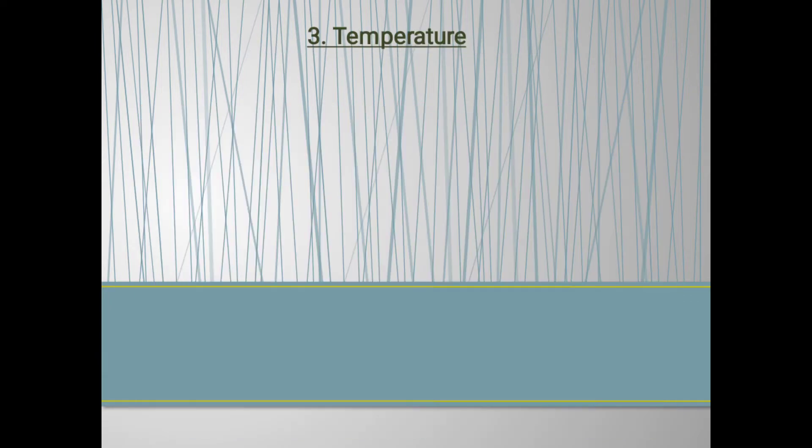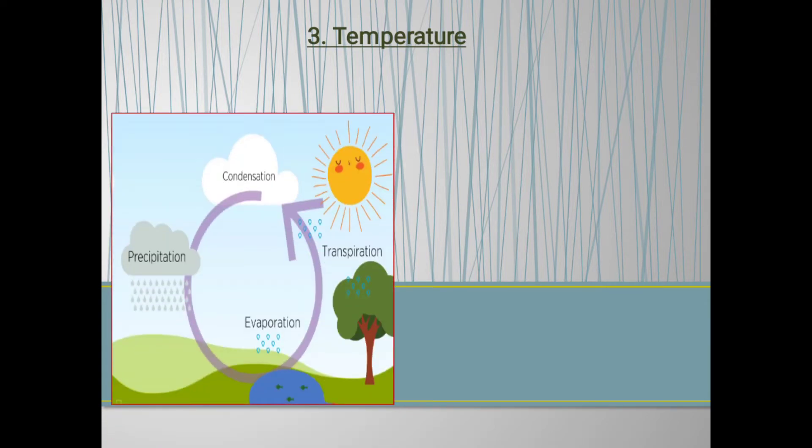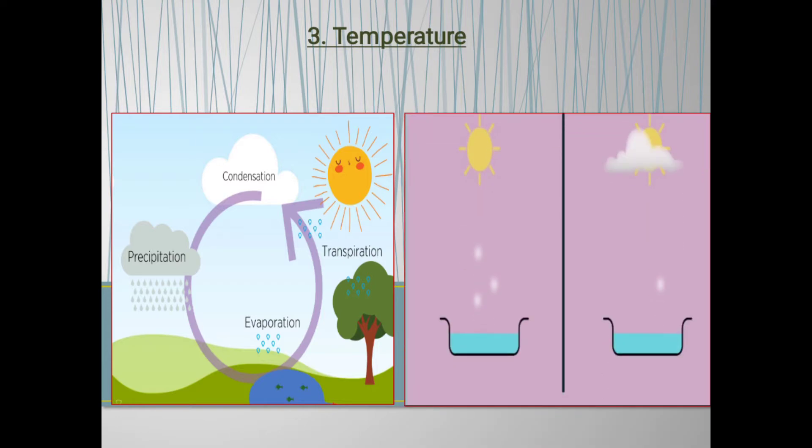Now the next one is temperature. When the temperature is high and the heat is greater, the rate of evaporation is also greater. But on a rainy day, when the temperature is lower and the heat is less, the rate of evaporation is lower. It means that when the temperature is high or sunny weather, the rate of evaporation will increase.